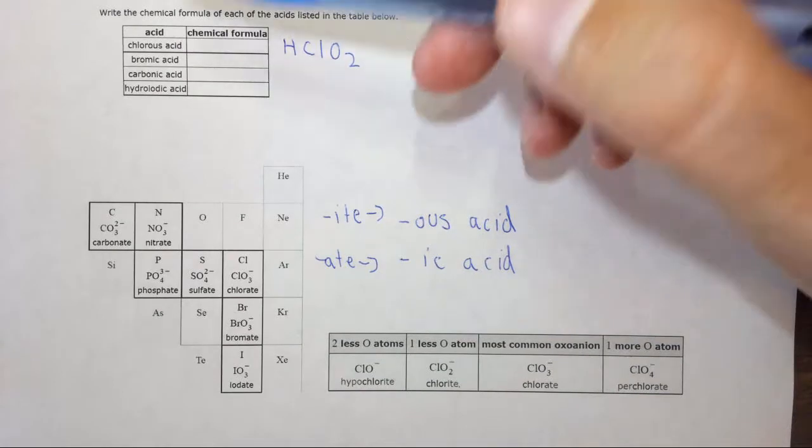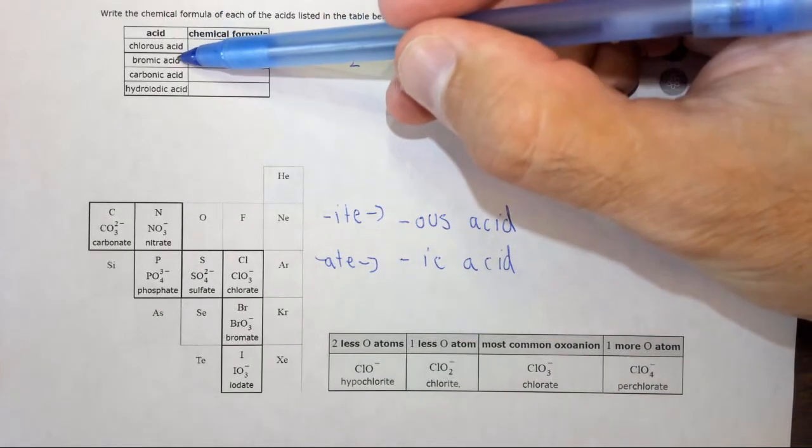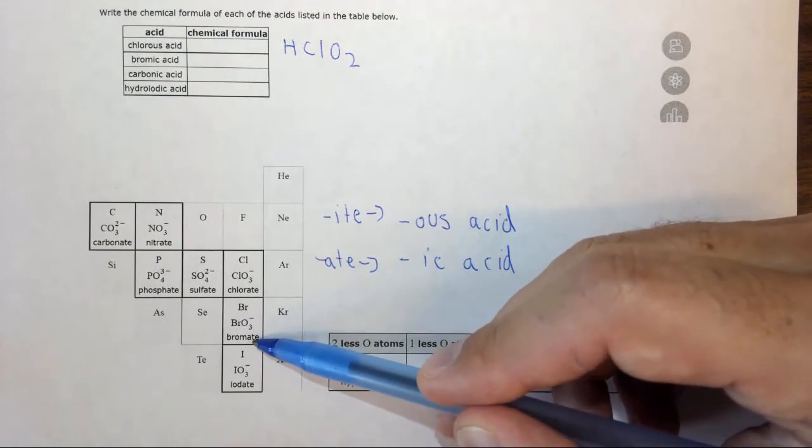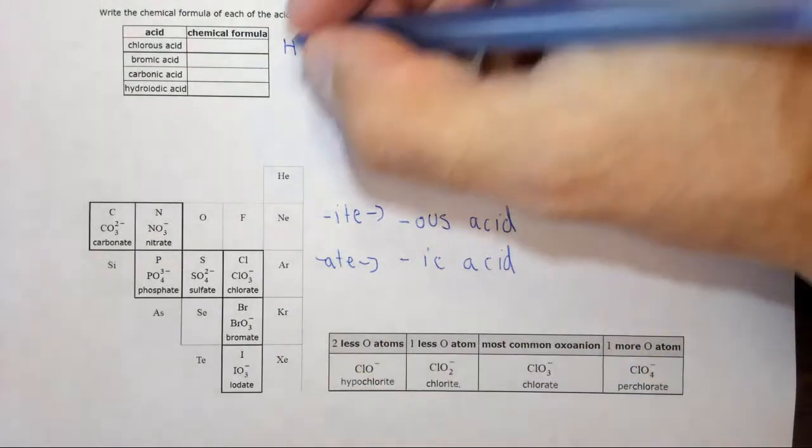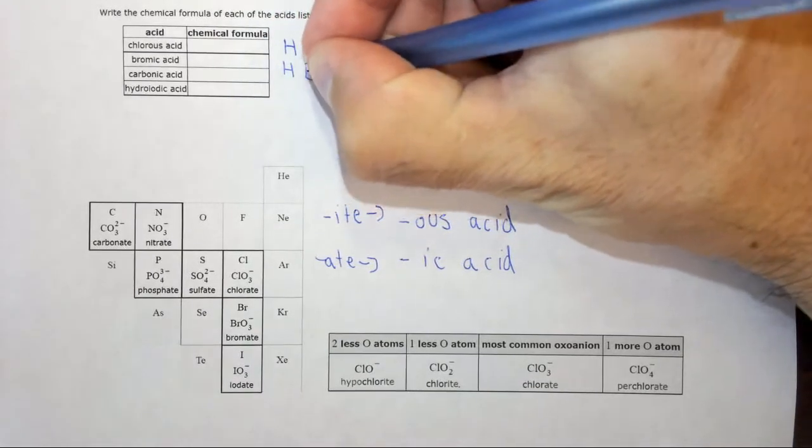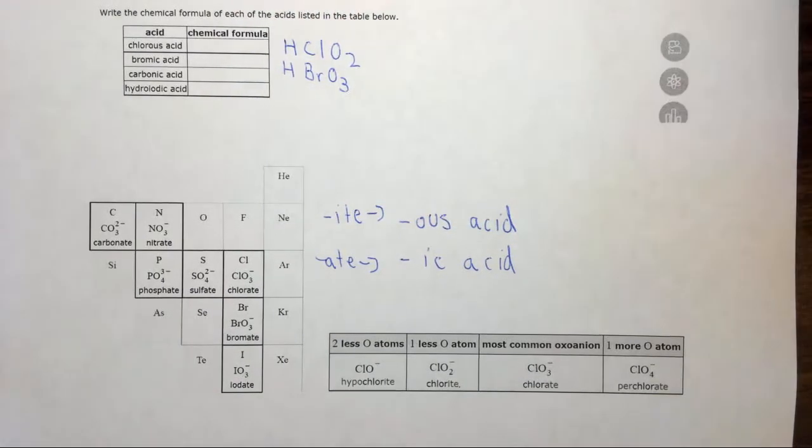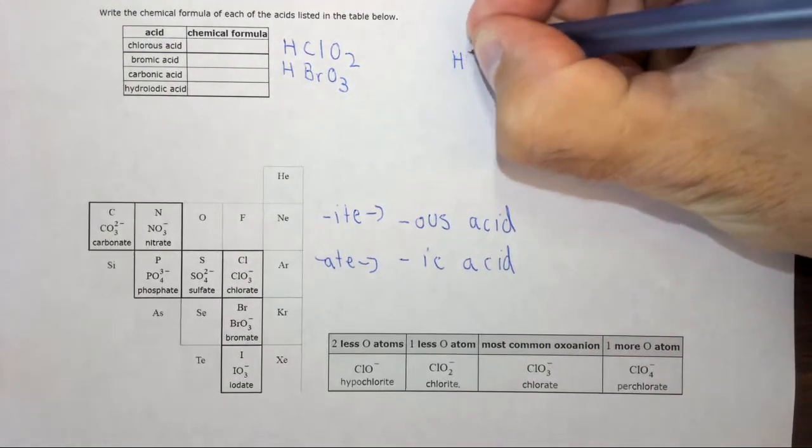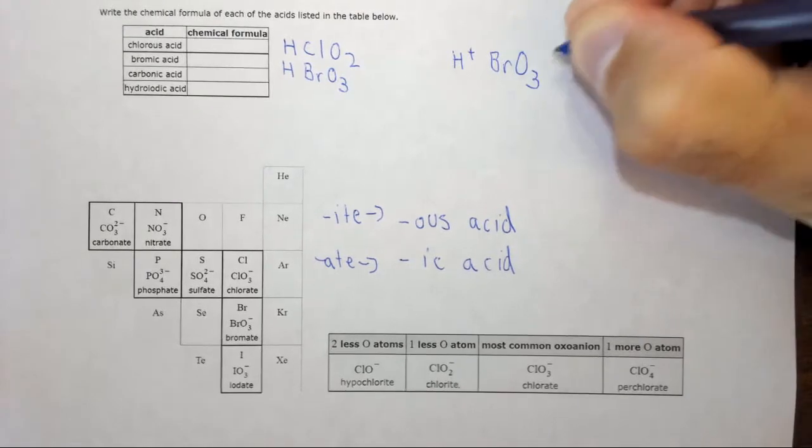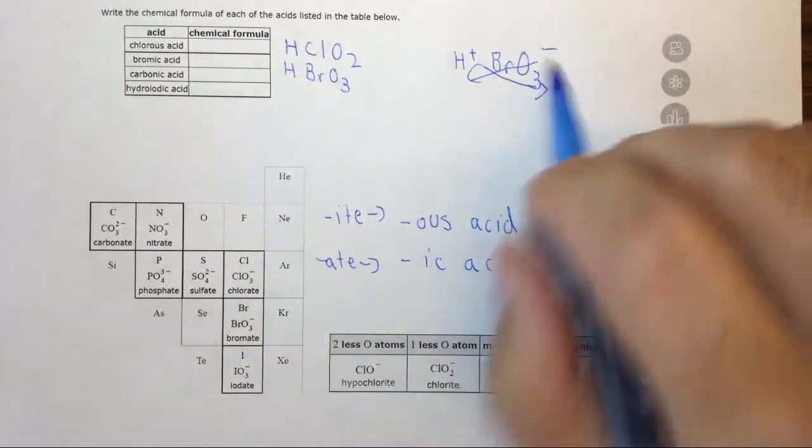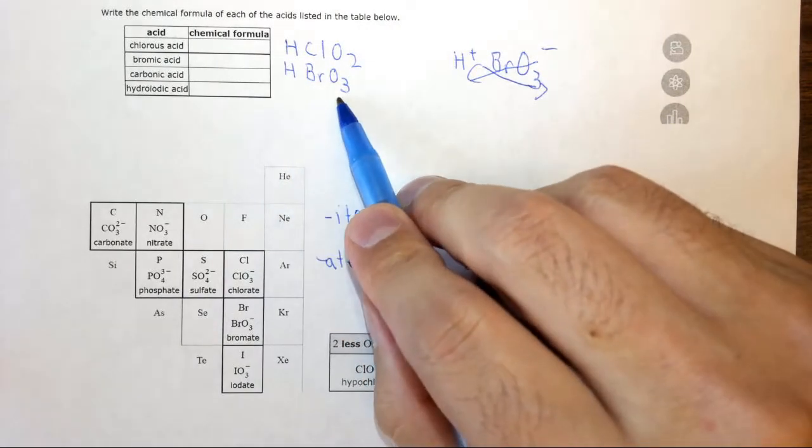In the next case we have bromic acid. Bromic acid comes from bromate. Since there's one negative charge we do need one H, so it's HBrO3. To show this another way, you could think about it as H plus and BrO3 minus, you can cross them just like you've done before and you get HBrO3.